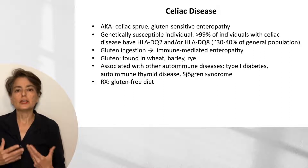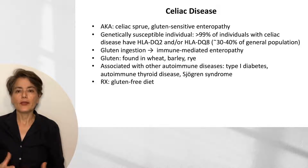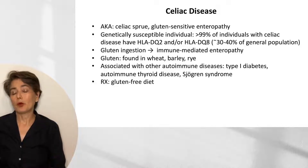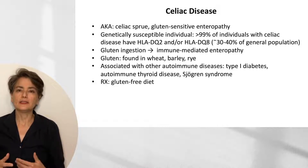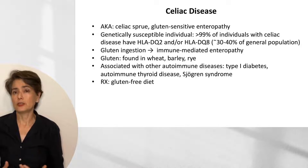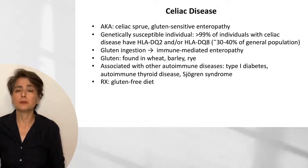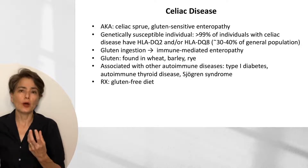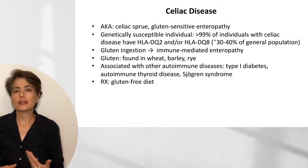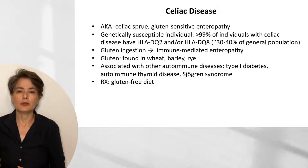When these individuals ingest gluten, they get an immune-mediated enteropathy. Gluten is found in wheat, barley, and rye, and it's important to recognize that this is a relatively recent addition to the human diet if you think about the evolution of the human species. We're not really designed to adequately digest this particular protein, which results in large peptides that can be quite immunogenic.